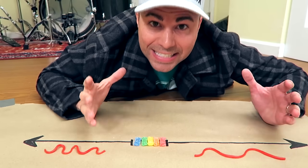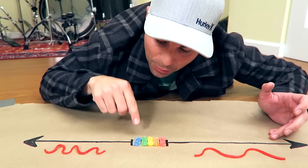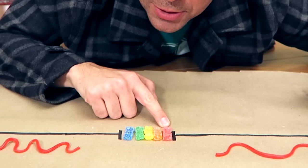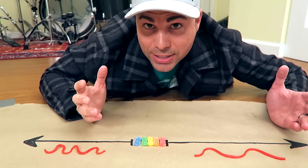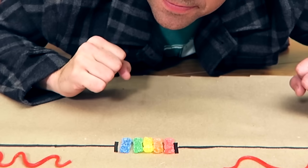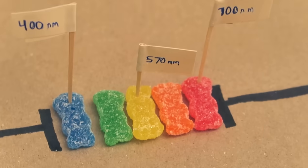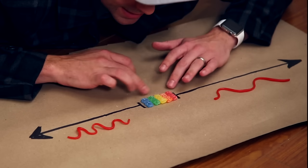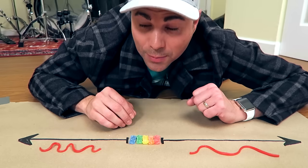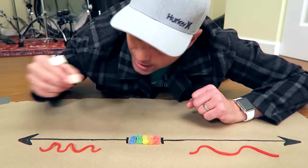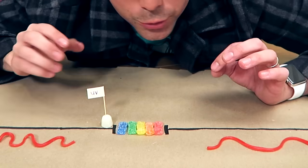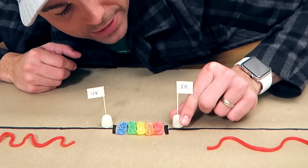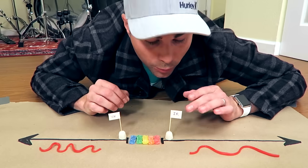Our eyes can actually see electromagnetic waves from 400 to 700 nanometers in length, and our brain distinguishes them as colors. So 400 is blue, and then up to 700 nanometers is red. But as soon as a wavelength gets out of this band, we can't see it anymore. And on the short wavelength side, we have ultraviolet, or UV. And on the longer wavelength side, we have infrared, or IR.